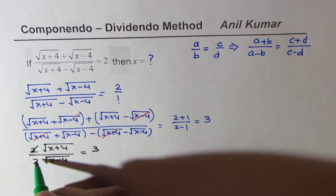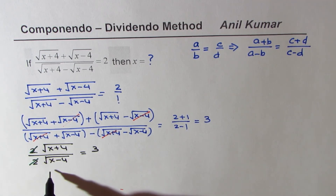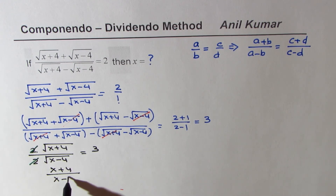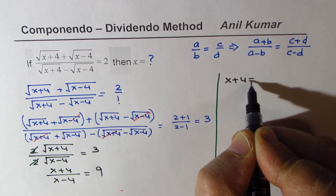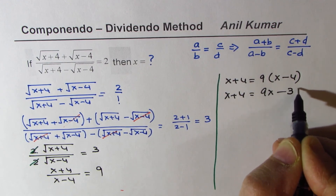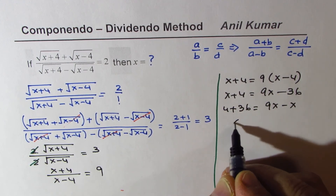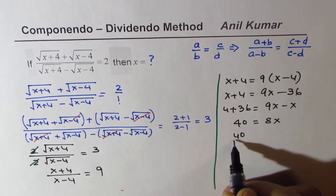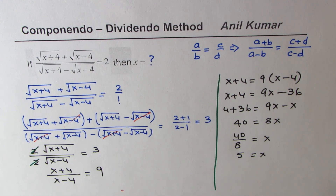We can cancel the 2s and cross multiply after squaring. Squaring both sides gives x plus 4 over x minus 4 equals 9. Now it becomes a very simple equation. Cross multiplying: x plus 4 equals 9 times x minus 4, or x plus 4 equals 9x minus 36. Taking constants to one side: 4 plus 36 equals 9x minus x, so 40 equals 8x, and 40 divided by 8 equals x. So x equals 5.